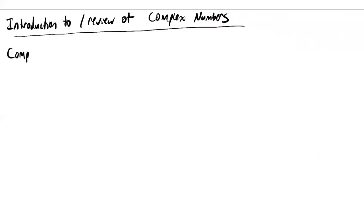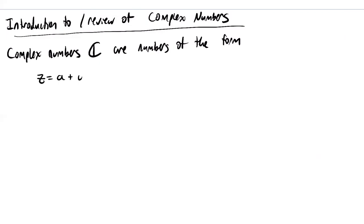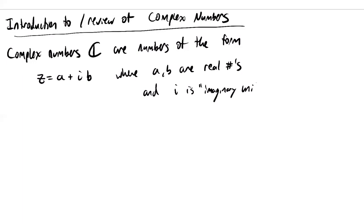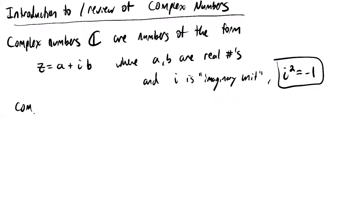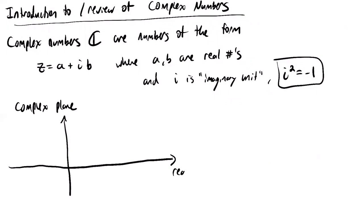Complex numbers are numbers of the form a + i times b, where a and b are real numbers and i is the imaginary unit with the property that i² = minus 1. Of course there is no real number that when squared gives minus 1, but we add an algebraic object with that property. You can model these in the complex plane, which looks like the x-y plane: the horizontal axis is the real axis, the vertical axis is the imaginary axis, and the point a + bi corresponds to the point (a, b) in the plane.